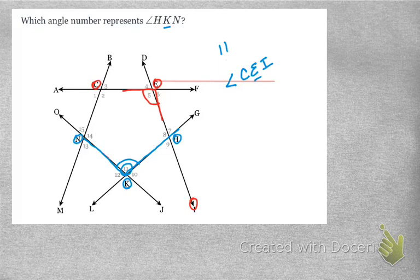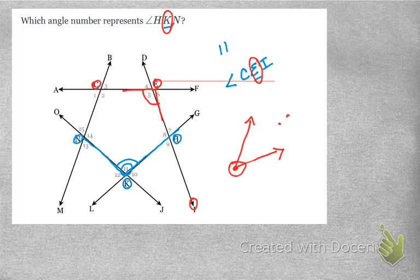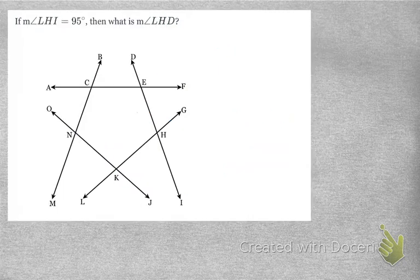That wasn't too bad. The terminology: an angle is two rays that meet at the same point. Two rays that meet up and share a point called the vertex. This is your vertex of your angle, and the center letter when it's written in letter form is always identifying your vertex.